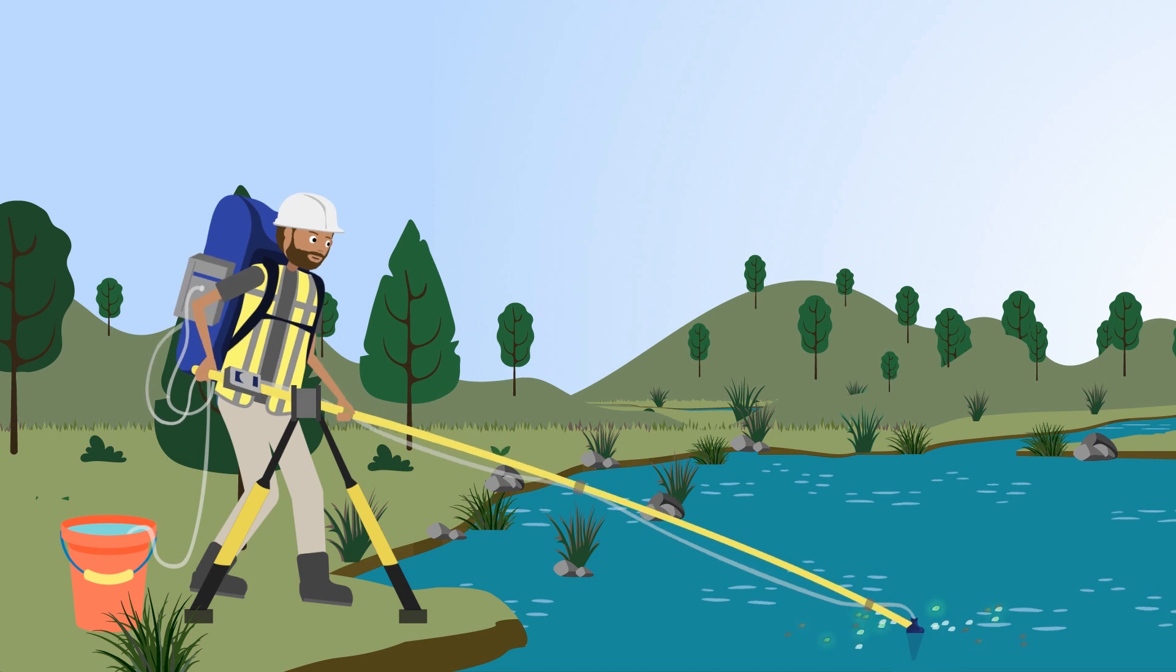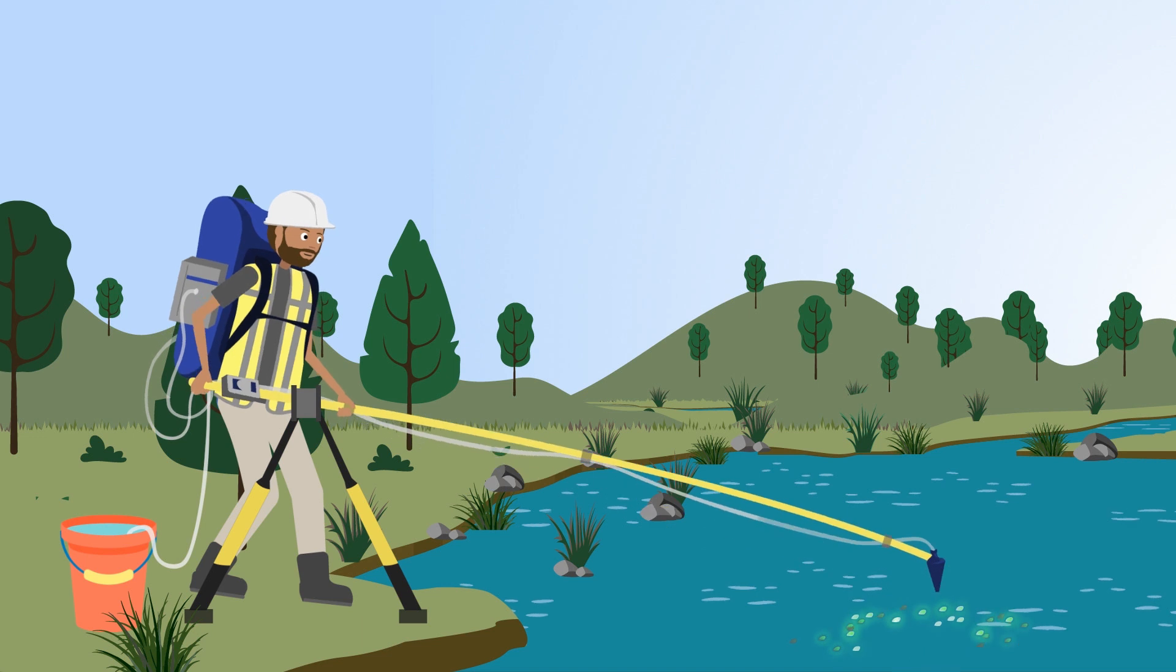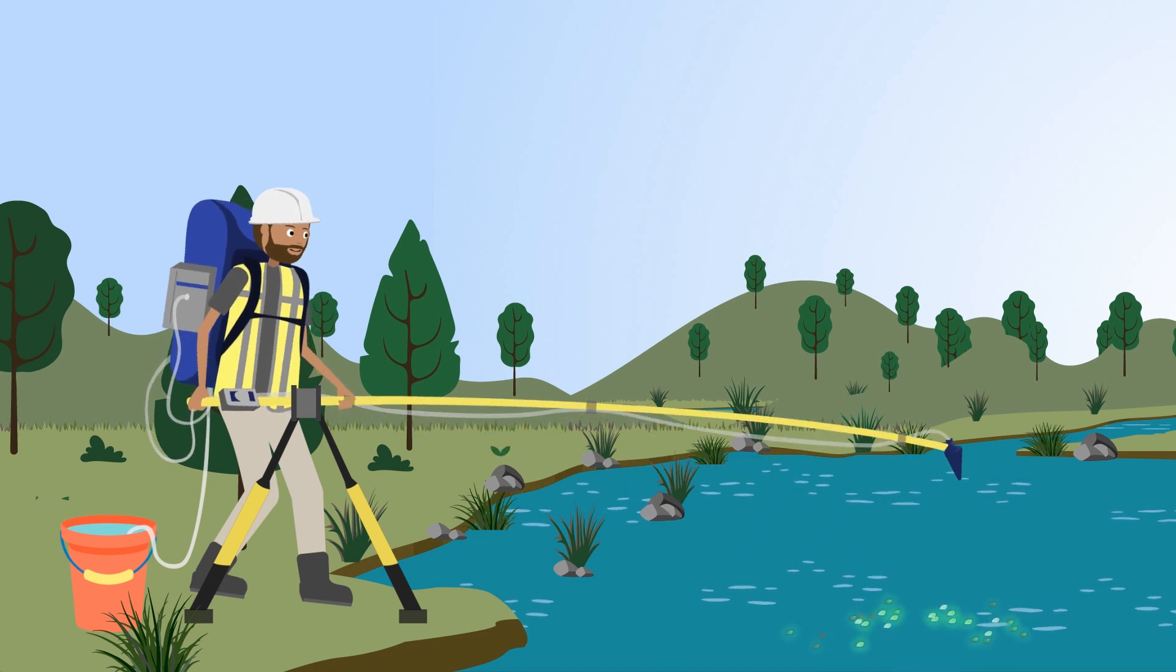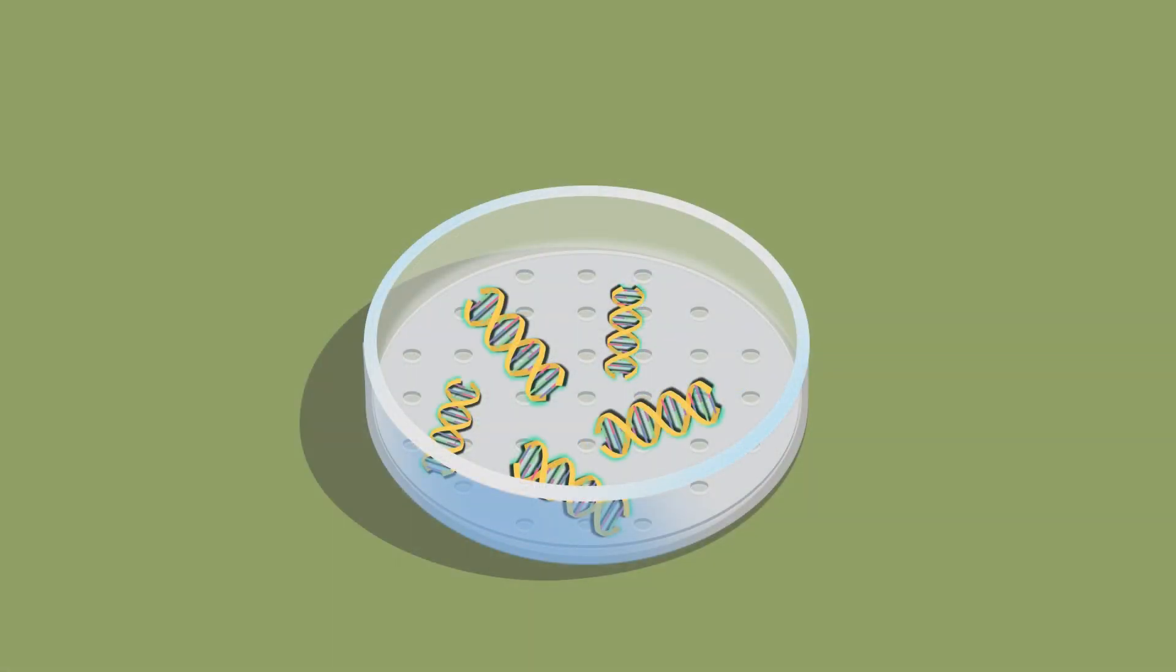Field scientists obtain samples of the environment they're interested in, like a pond or a lake. The samples will contain eDNA from all the organisms that live there. This eDNA is filtered and extracted on site to avoid degradation when the samples are shipped.